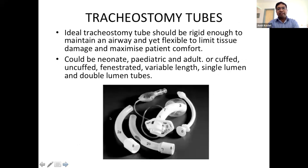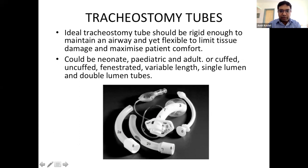With this physiology in mind, the ideal tracheostomy tube must be rigid enough to maintain an airway — so it does not collapse — yet flexible enough to limit damage and maximize patient comfort. Tubes can be neonatal, paediatric, or adult, and may be cuffed or uncuffed. A standard cuffed tube has a cuff, a pilot balloon, an inner tube, and a connector for oxygen or filters. There are also fenestrated tubes with outer and inner cannulas, and an introducer.